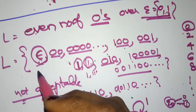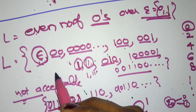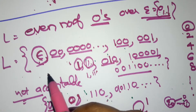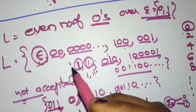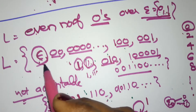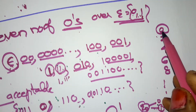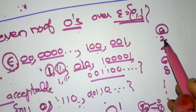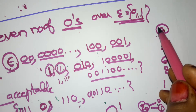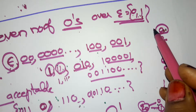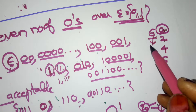Acceptable strings means: after reading the entire input symbol, if the machine reaches the final state, then you can say the string is acceptable. For even number of zeros — that means zero zeros, two zeros, four zeros, six zeros, eight zeros, and so on.